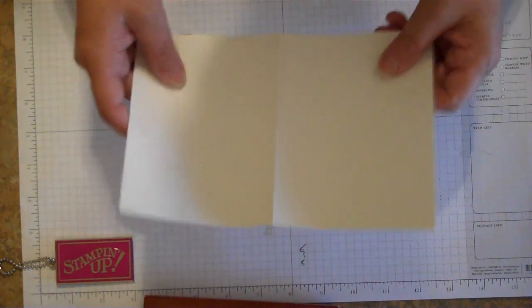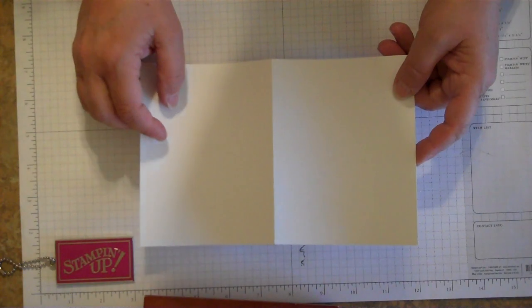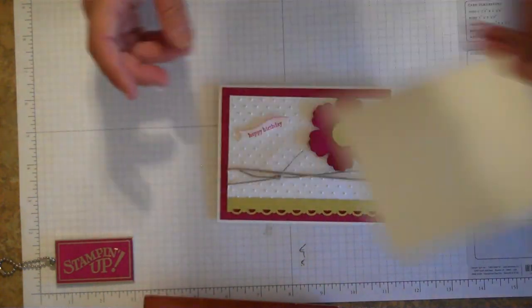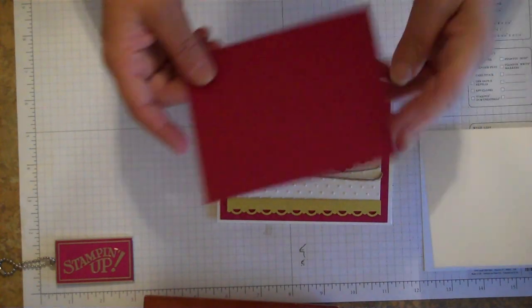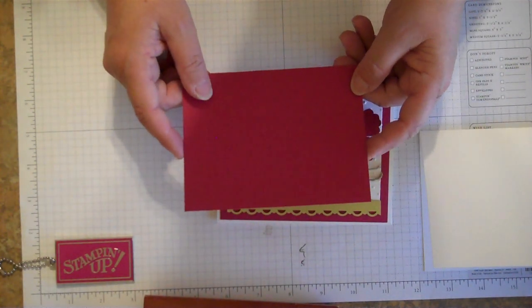So what we're going to use first is a piece of Whisper White cardstock cut at 8½ by 5½, and you're going to score it at 4¼. This will be our base. Then I'm going to be using one of our new in colors called Raspberry Ripple to border that out and make the layer.